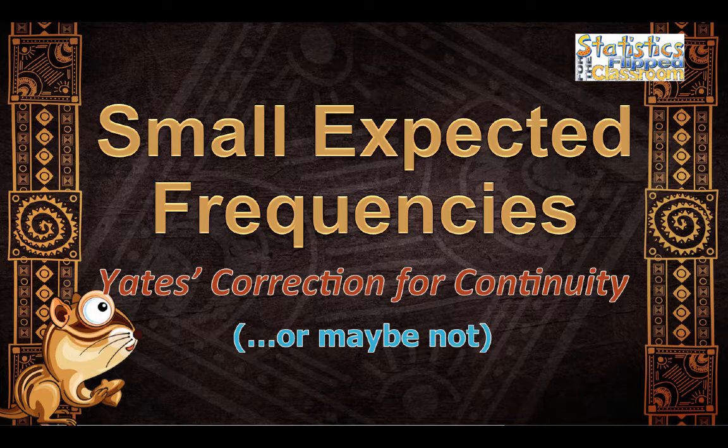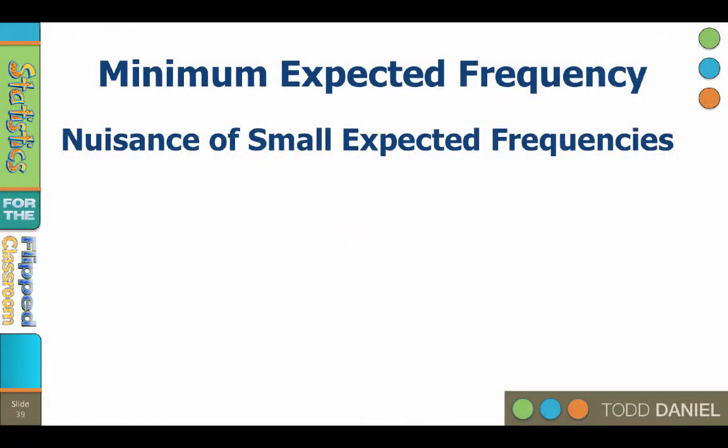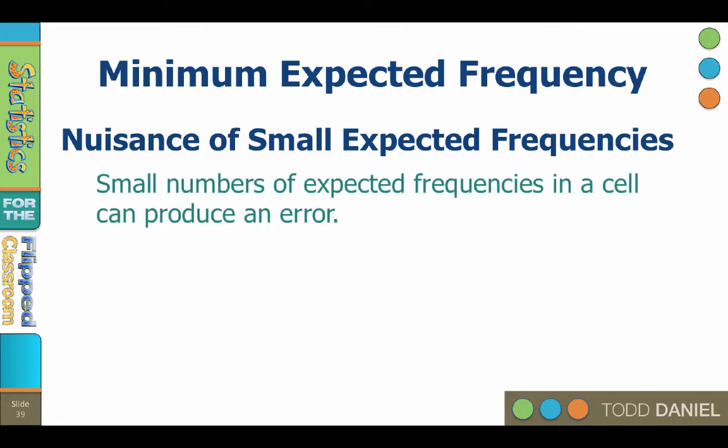There is one more important detail that you need to know about all forms of chi-square tests, from one-way to large cross tabulations, and it has to do with the size of the expected frequencies that you use. I want to warn you about the nuisance of small expected frequencies. In the one-way chi-square goodness-of-fit tests that we learned on, the expected frequencies were all larger than 5, but small values for expected frequencies in a cell will increase the chance of a type 1 error.